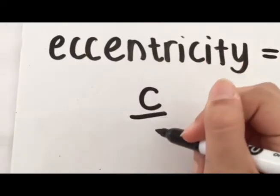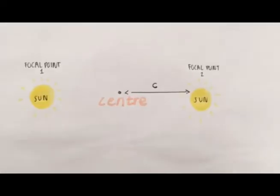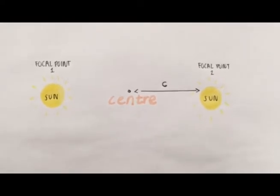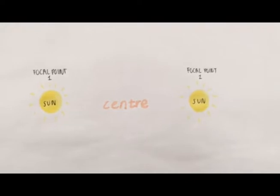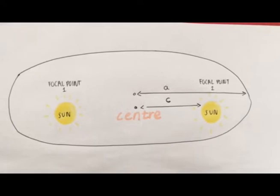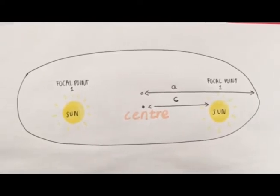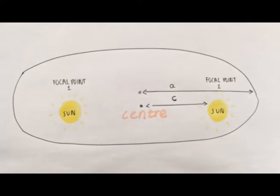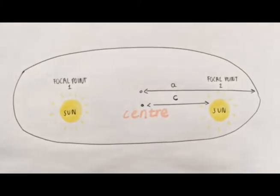The formula for eccentricity is C over A. C defines the length from the centre to either focal point. There are two focal points where the Sun can be positioned during orbit. A defines the radius from the centre to the vertex. In this case, a vertex is the point which deviates a curvature.